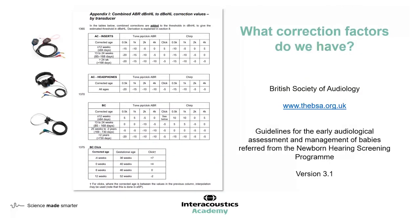One thing to draw attention to is that there are different values for different stimuli — tone pips or bursts, and clicks and chirps. For now it's important to be aware that the chirp category has been based on data using the CE chirp. There are other chirps available, and it is important to be aware that these may perform differently or have different RETSPL values. You'll notice that the document says 'combined correction factors' — let's go on to have a look at what goes into making these values.